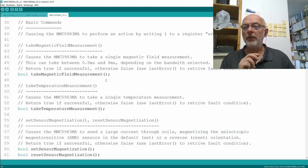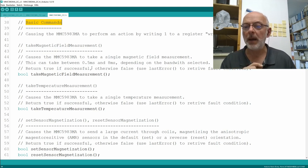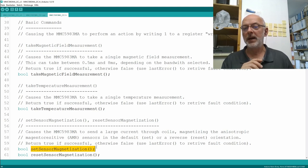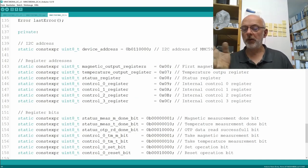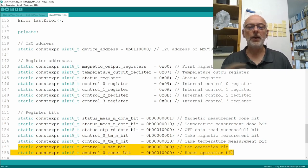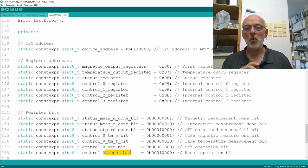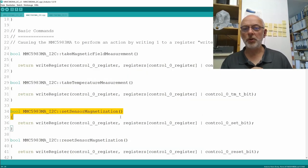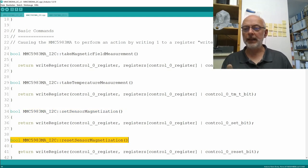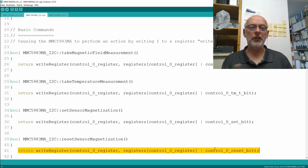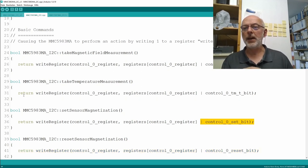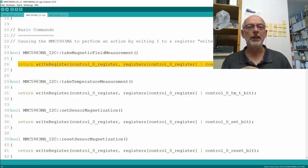Okay, let's go real quick over the implementation of these two new, as I call them, basic commands and that is the set sensor magnetization and reset sensor magnetization. Nothing new here. They just work exactly like take magnetic field measurement and take temperature measurement. So, of course, we have also in our header file of the library two new bits here for set operation bit and reset operation bit in our control register 0. And then we have the implementation of those public methods here and they are really exactly the same, just setting another bit here like the take temperature measurement stuff and the take magnetic field measurement stuff.